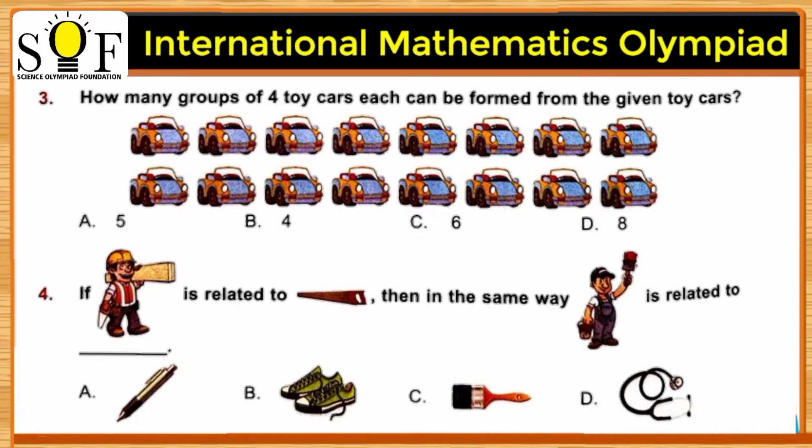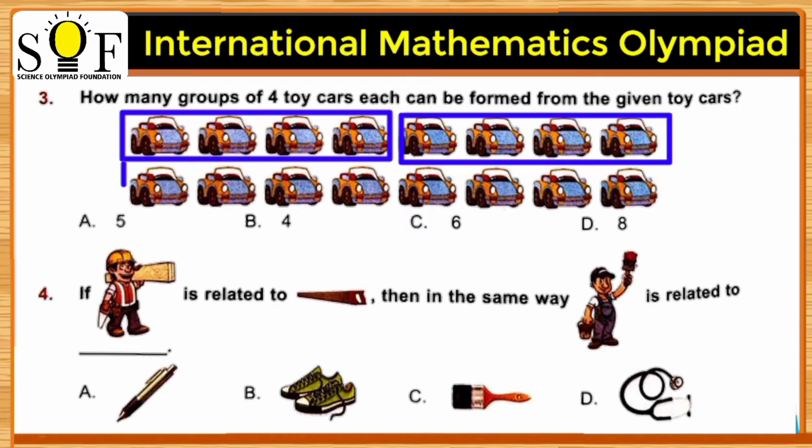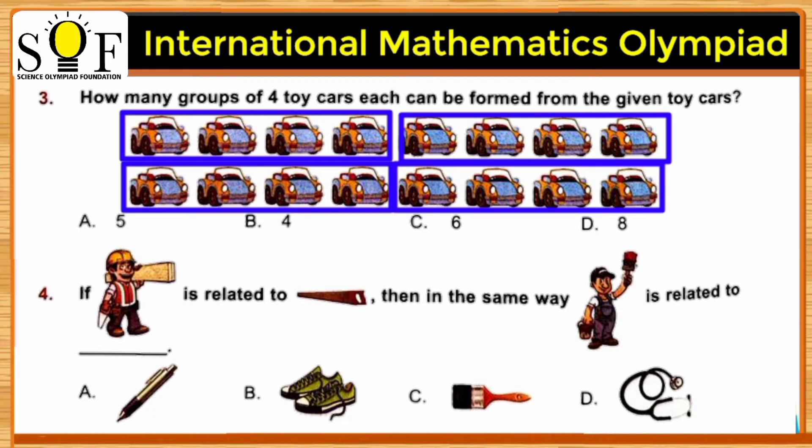Here we need to form groups of toy cars, and each group should have four toy cars. So let's form a group. This is our first group, group number one, group number two, group number three, and group number four.